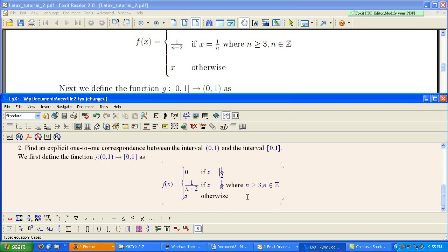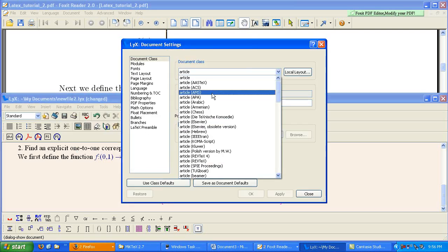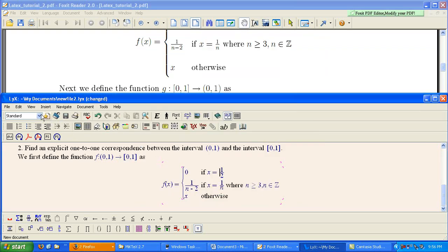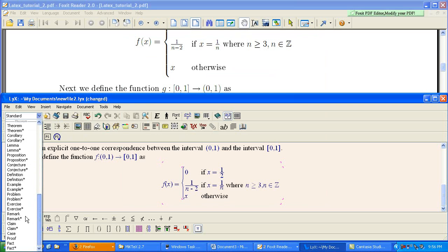Now, in order to get the proof environment, we need to change the document type here. So, we're going to go to document, Document settings. And in document class, we want to change this to article AMS, which stands for American Math Society. So, now you'll see we have a huge list of things here for American Math Society. They're all right here.